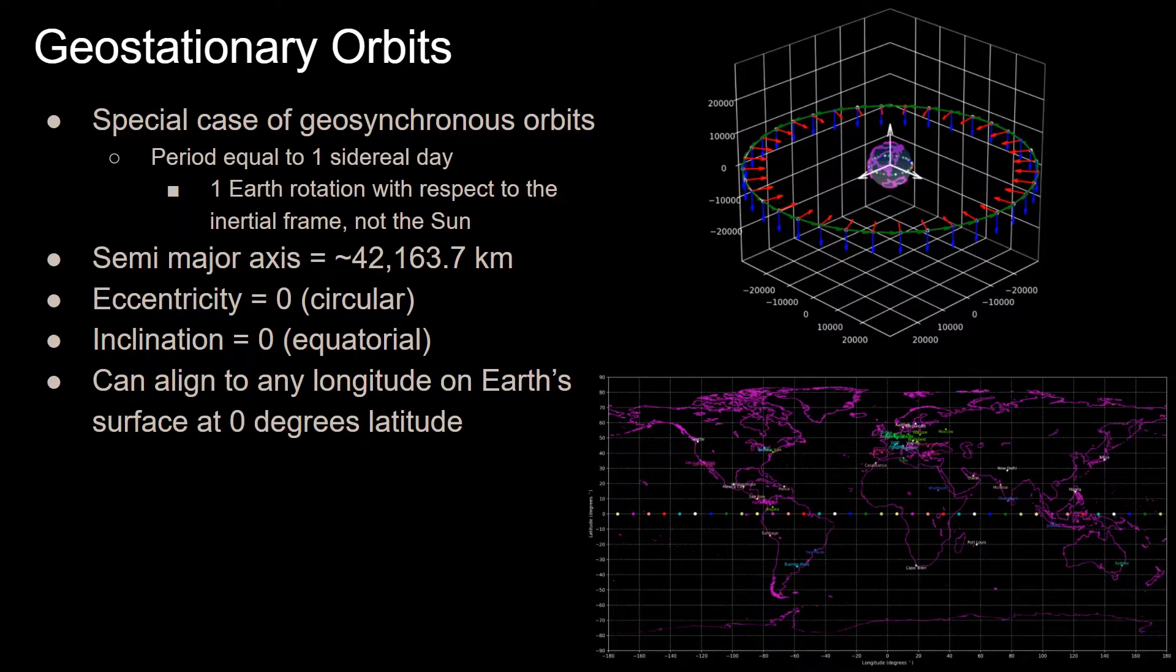So to get to the definition of a geostationary orbit, they are a special case of geosynchronous orbits, which are orbits that have an orbital period of one sidereal day, which is equal to about 23 hours, 56 minutes, and 4 seconds.